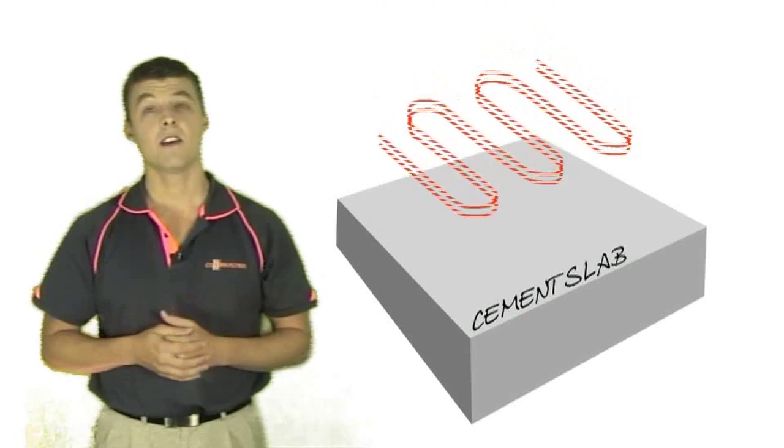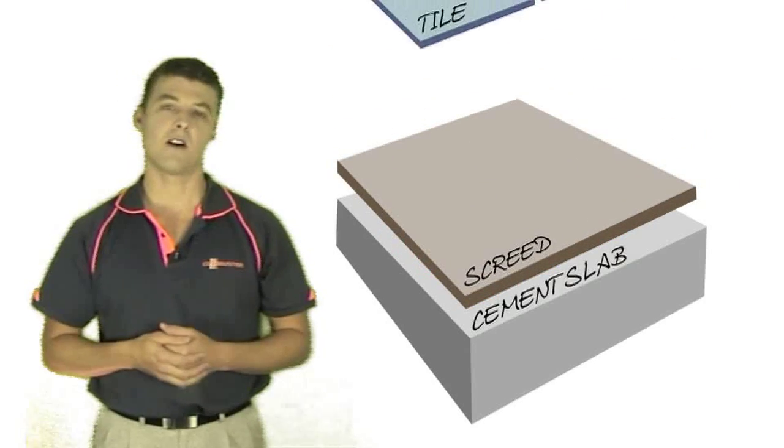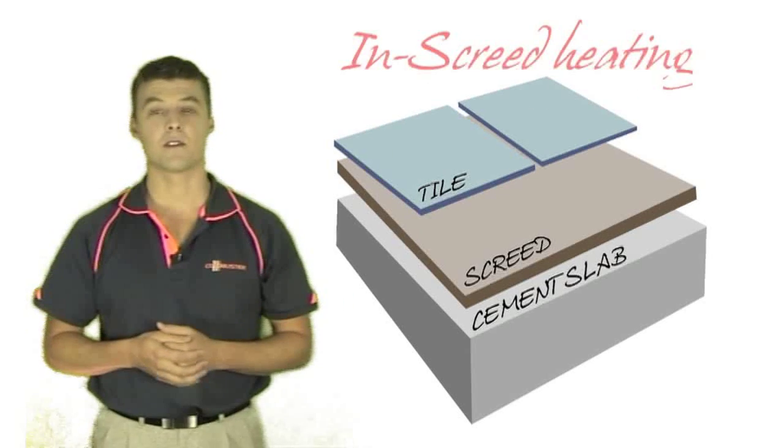With in screed heating the thinner elements are installed on top of the slab and a layer of sand and cement tile bed is applied over the cables to ensure a smooth surface for tiling.